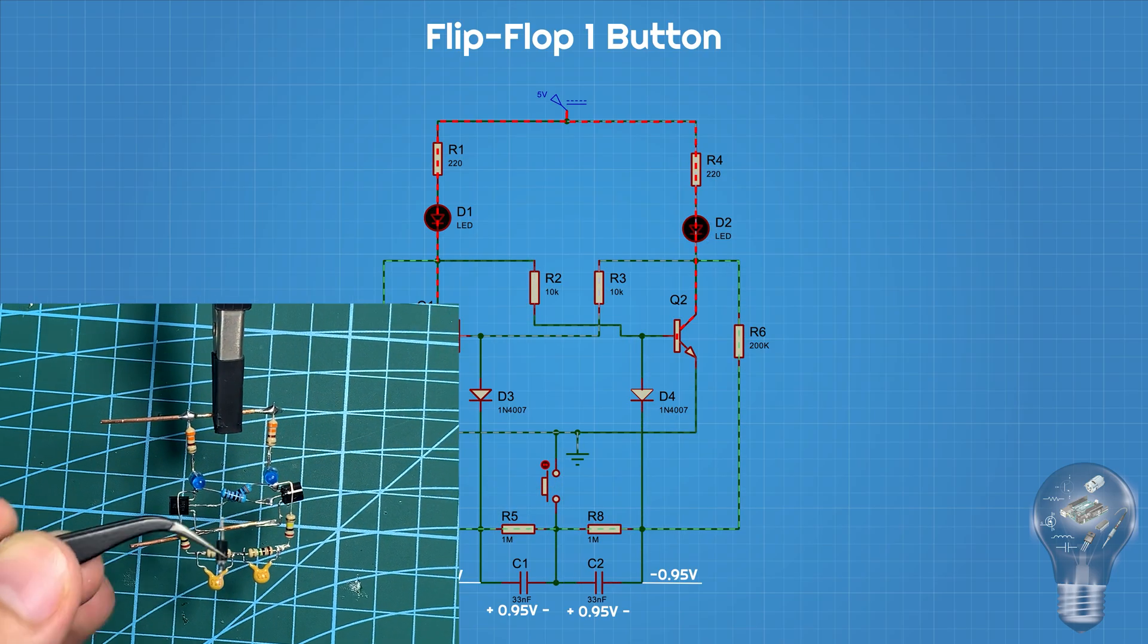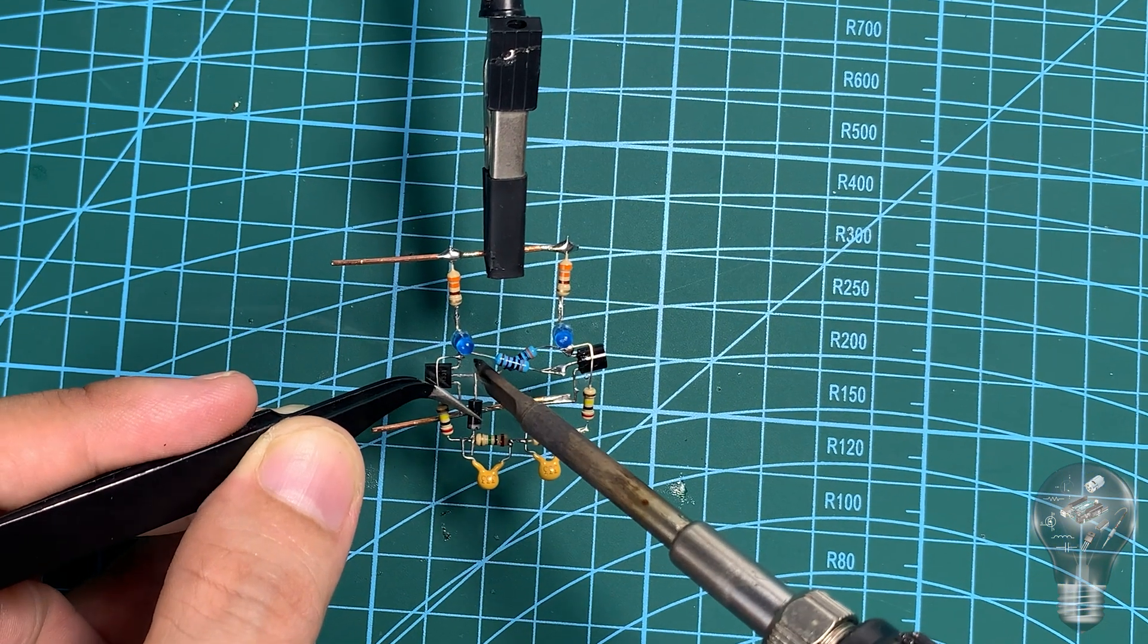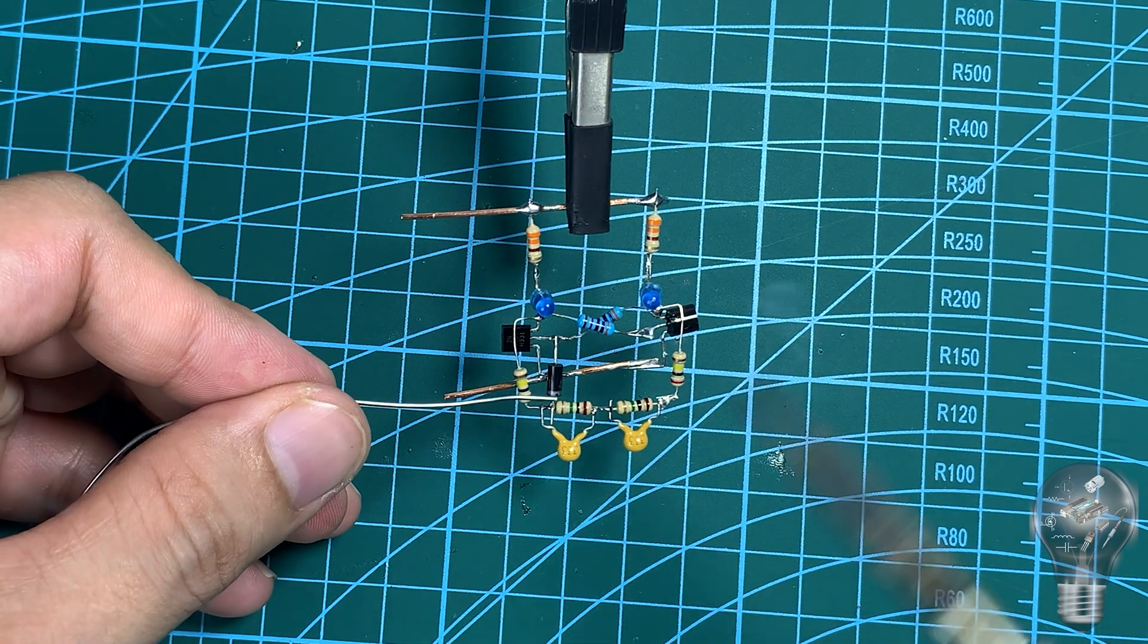Similarly, if we press the button again, the process is reversed and the LEDs change state alternately. Now, let us solder the actual circuit together and see the result.